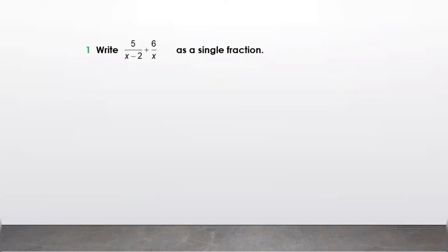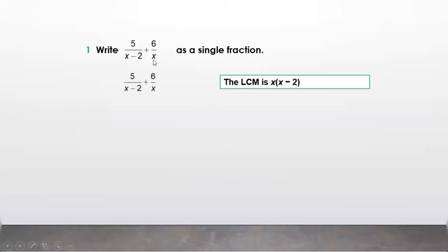Now write 5 upon (x minus 2) plus 6 upon x as a single fraction. What we need to do here is find the LCM. The LCM of (x minus 2) and x is x into (x minus 2), written as x(x minus 2).